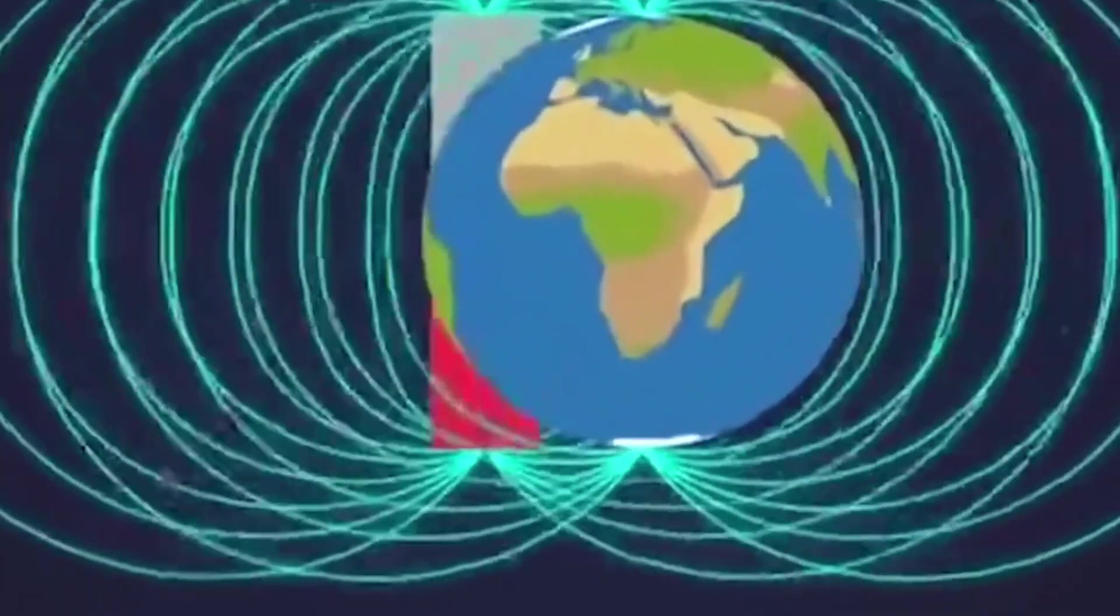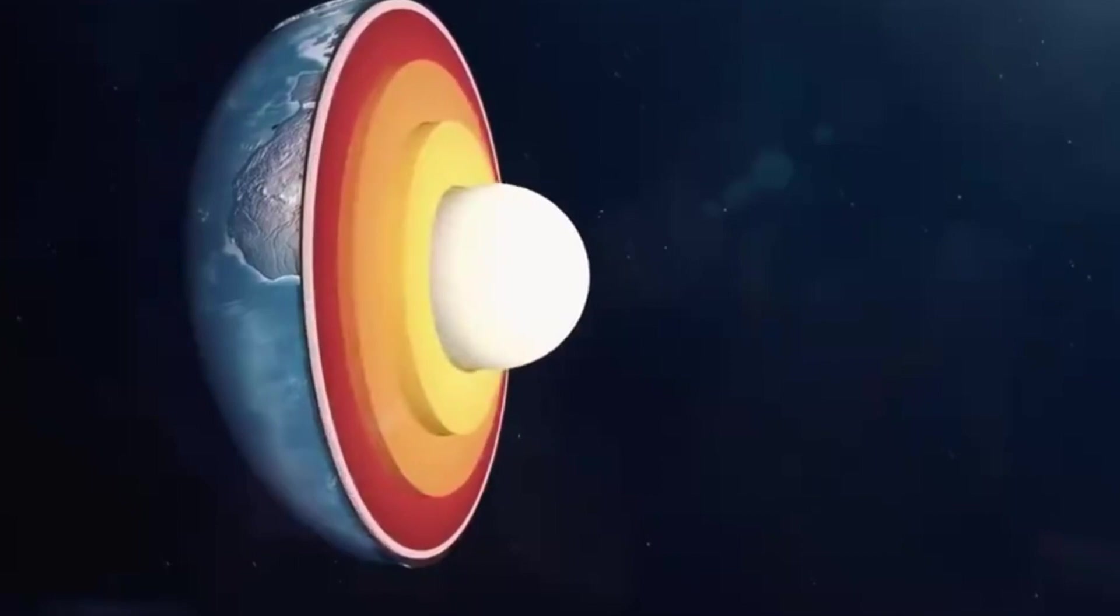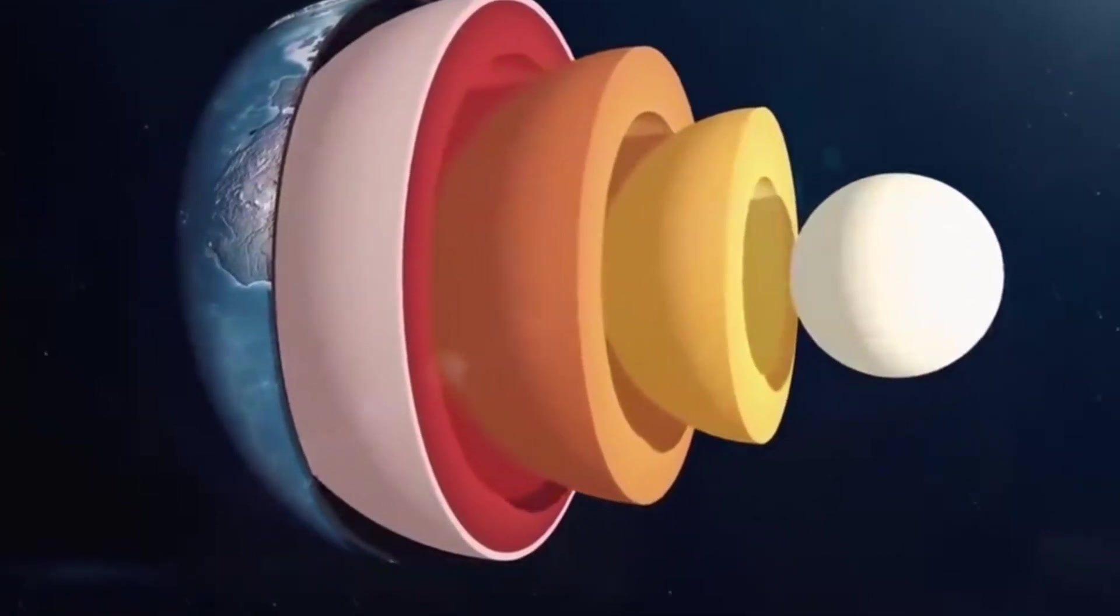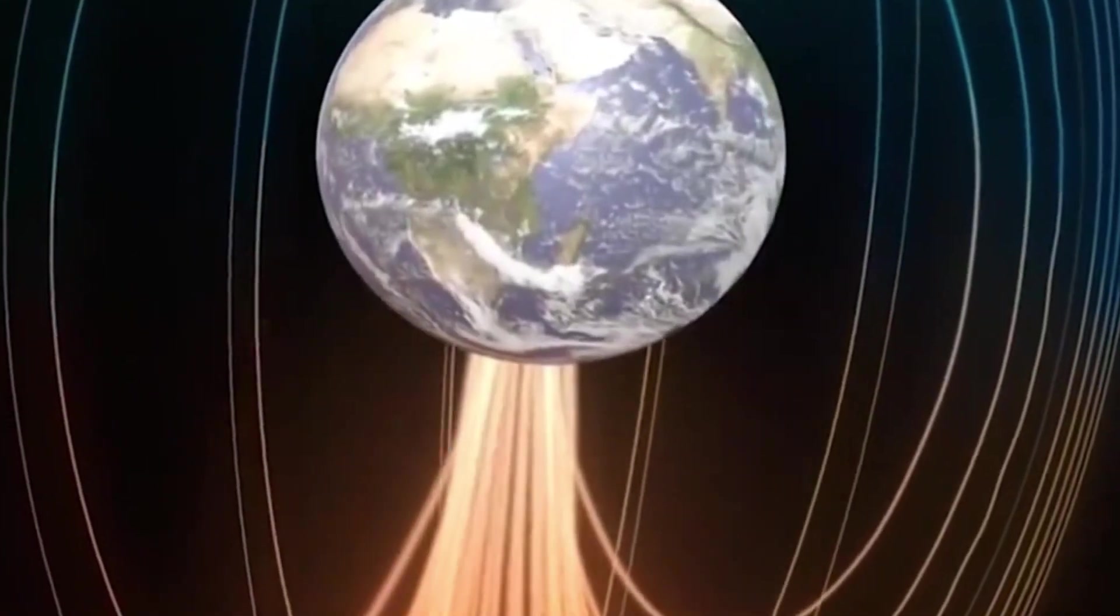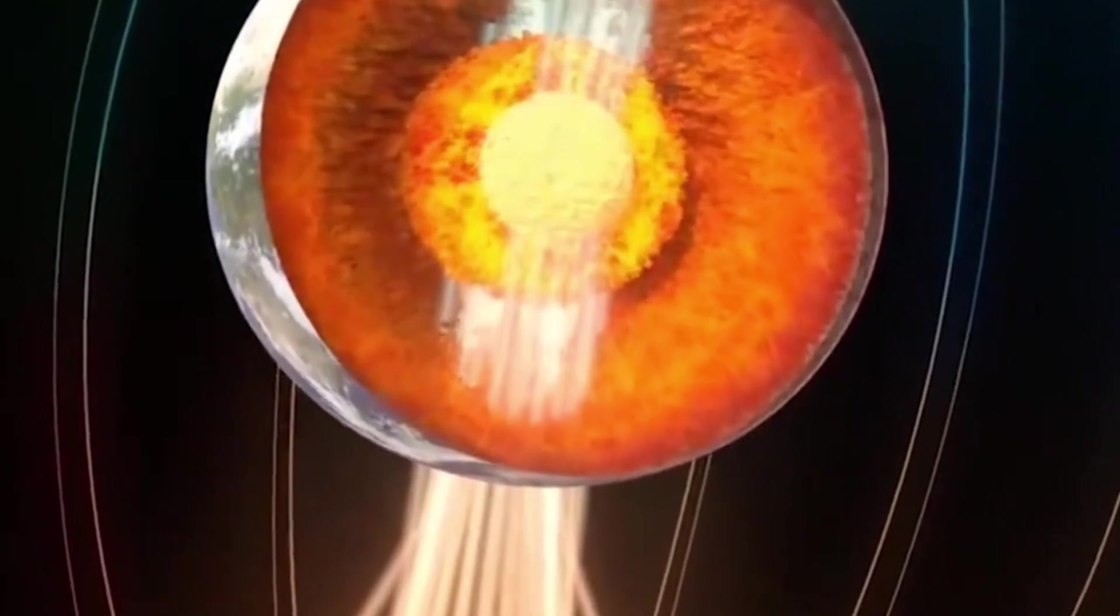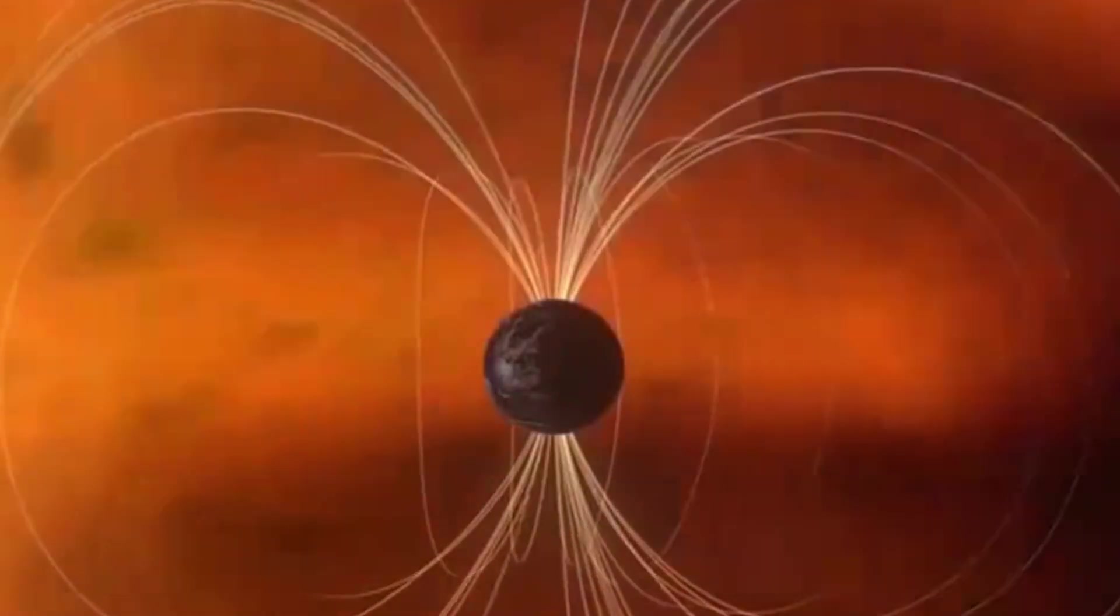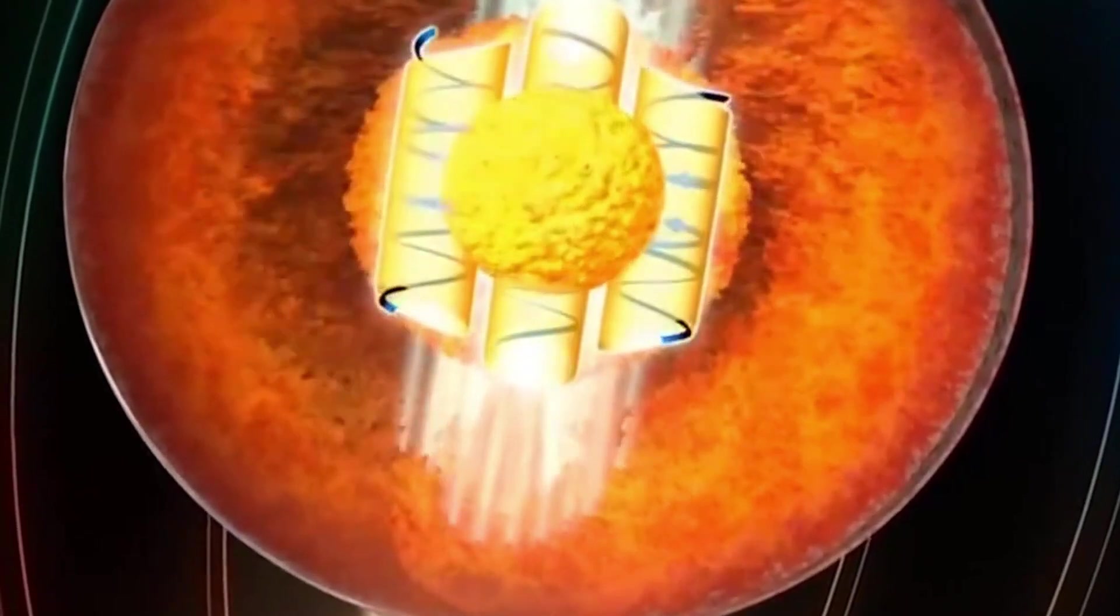Scientists studying rocks, ice cores, and sediments have traced these shifts through time. Each one left a signature etched into the magnetic minerals of Earth's crust, a permanent reminder of how unstable our shield can be. And as modern instruments track today's field, researchers are seeing troubling signs. It's weakening, drifting, and behaving in ways that suggest another reversal could be closer than we think.